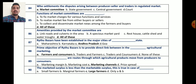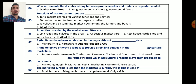Question number 87: Raitubazars have been established in the major cities of which state — Maharashtra, Karnataka, Andhra Pradesh, or Goa? As discussed in an earlier video, Raitubazars were first started by Andhra Pradesh state. The prime objective of establishing Raitubazars is to provide a direct link between farmers and consumers in agricultural marketing.